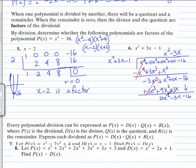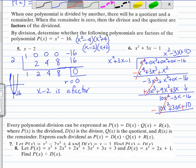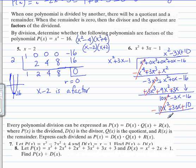Divide again. 10x squared divided by x squared is 10. Multiply by everything. That gives us 10x squared. 10 times 3x is 30x. 10 times negative 1 is negative 10. Change the signs and add. We get negative 33x minus 6. This is our remainder.